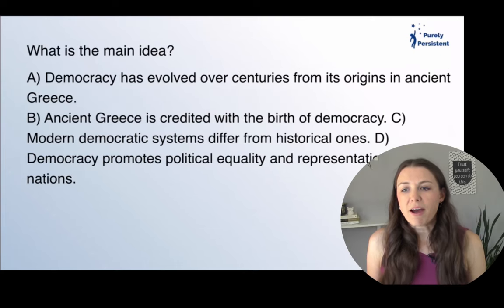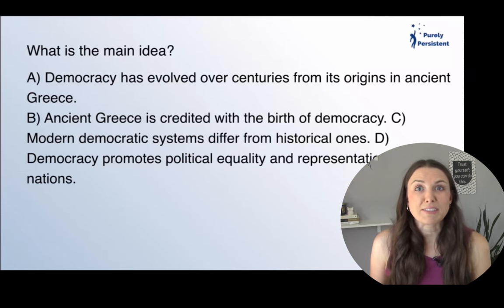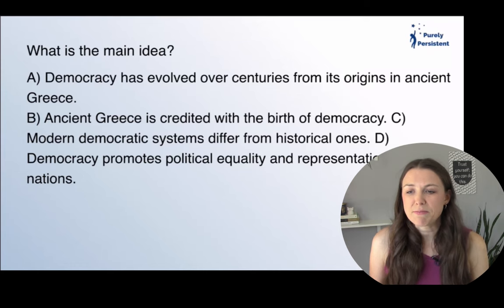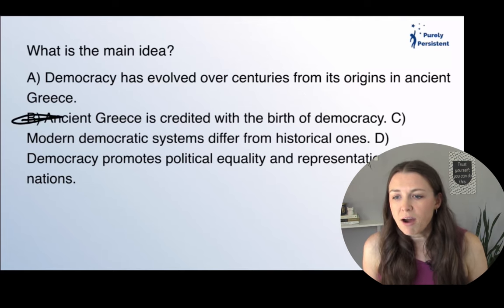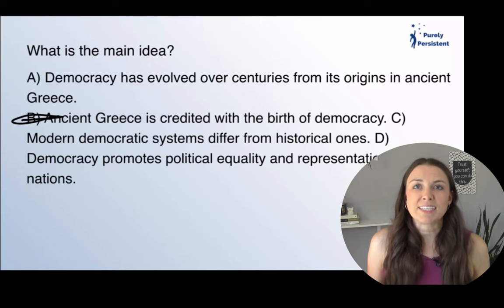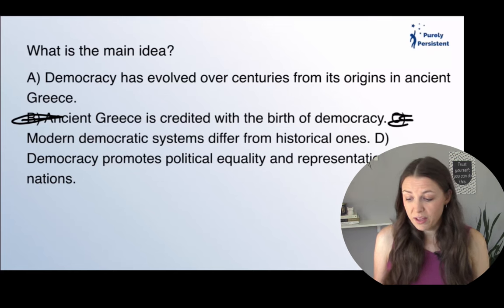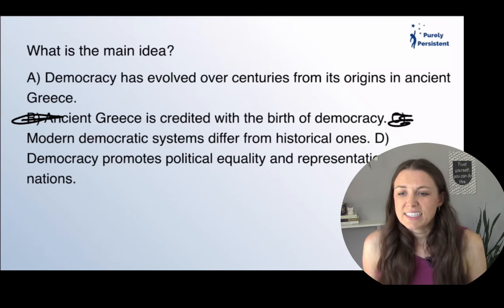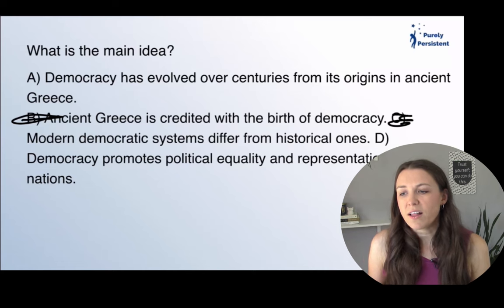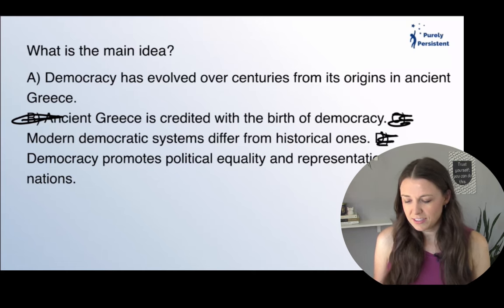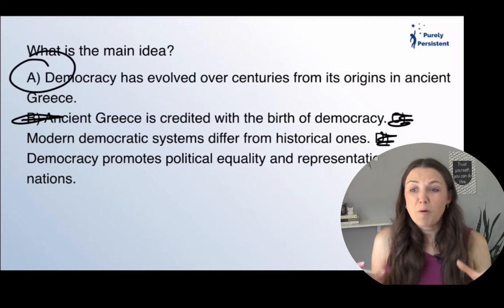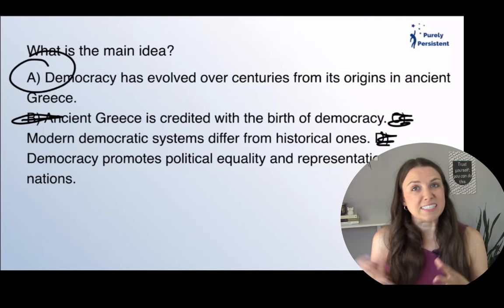'Democracy has evolved over centuries from its origins in ancient Greece' — that's really what it talked about, how it evolved. 'Ancient Greece is credited with the birth of democracy' — that's a good supporting detail. 'Modern democratic systems differ from historical ones' — if that were the main idea, it would explain how; it just says they are different. 'Democracy promotes political equality and representation in many nations' — again, it's really talking about the history of how it started in Greece and then evolved. So the answer is A.